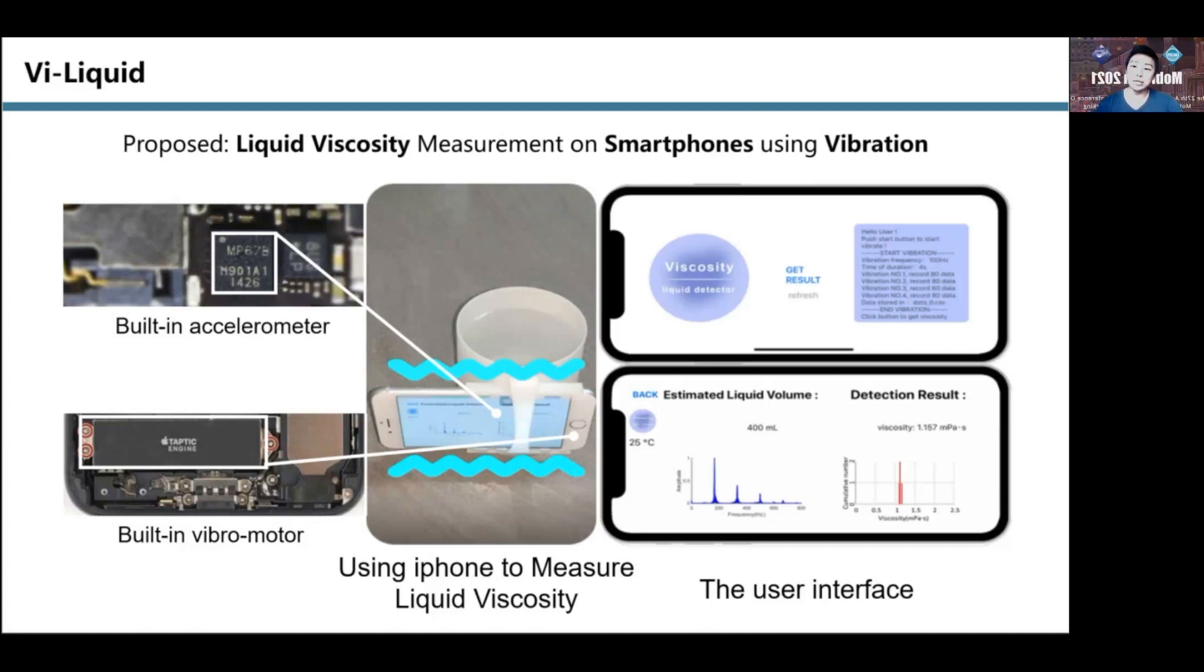ViLiquid is an unknown liquid testing system that can identify liquids from viscosity changes. This lightweight system leverages a built-in vibro-motor and accelerometer. Users attach the smartphone to a container, the system generates active vibration signals and classifies liquids from the viscosity calculated from the collected vibration signals.